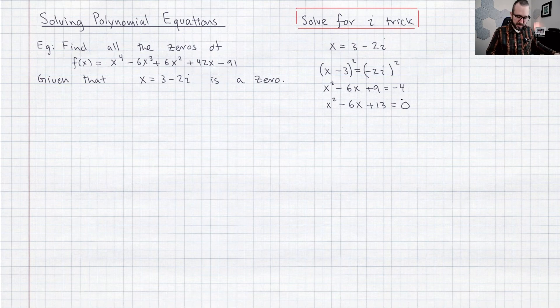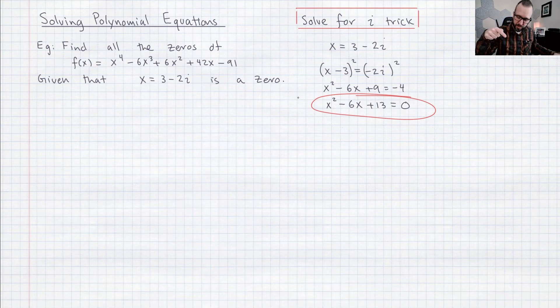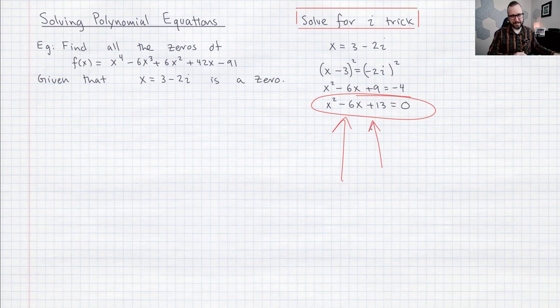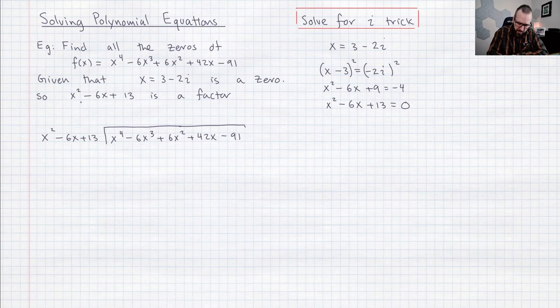So what that means is this is a zero of the original polynomial so that means this is a factor of the original polynomial and this guy right here has no more i's in it. So once you use that solve for i trick and you end up with this factor then that is really going to make the problem a lot more simple because now I have a factor that doesn't have i's in it.